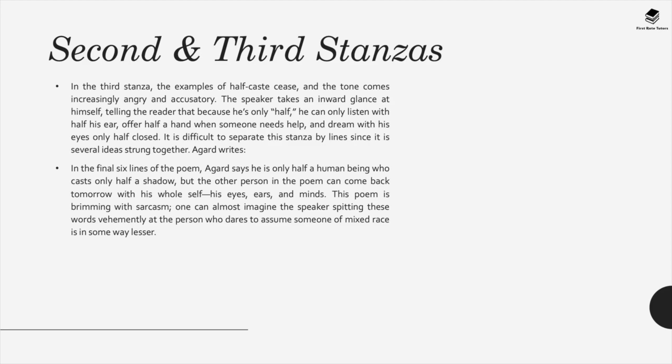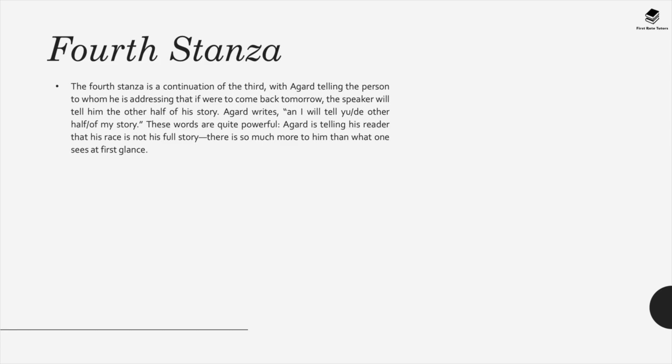In the third stanza, the tone becomes increasingly angry and accusatory. The speaker then turns an ironic glance at himself — saying that because he is only 'half,' he can only listen with half an ear, offer half a hand when someone needs help, and dream with only one eye half closed. In the final six lines, Agard says he casts only half a shadow, but invites the racist person to come back tomorrow with his whole mind, all his eyes and ears open — and perhaps understand the perspective of an ethnic minority, realising it is they who are ignorant.